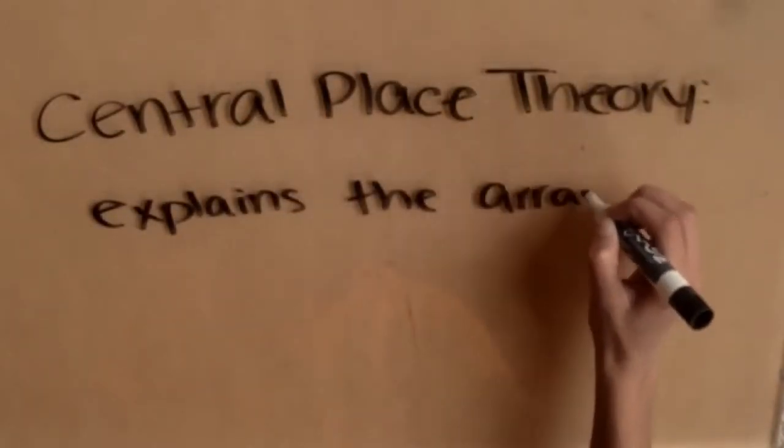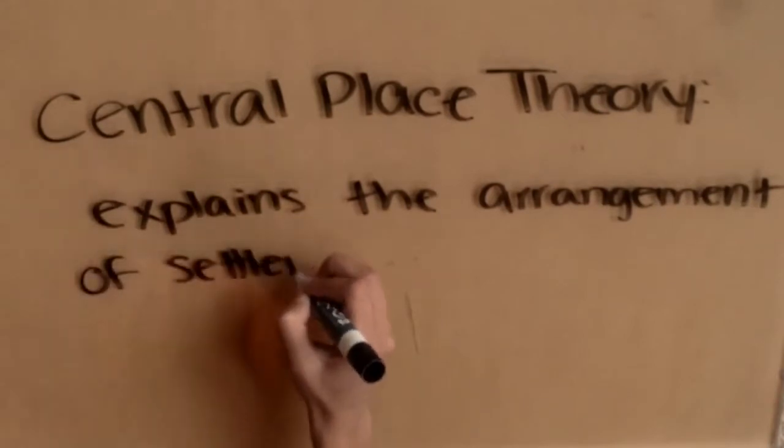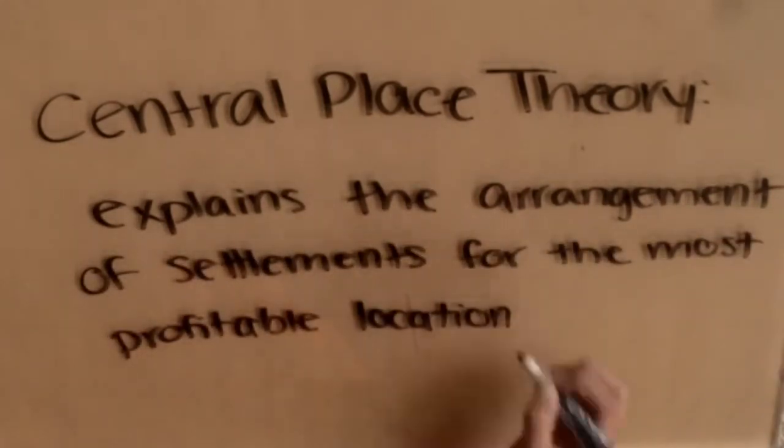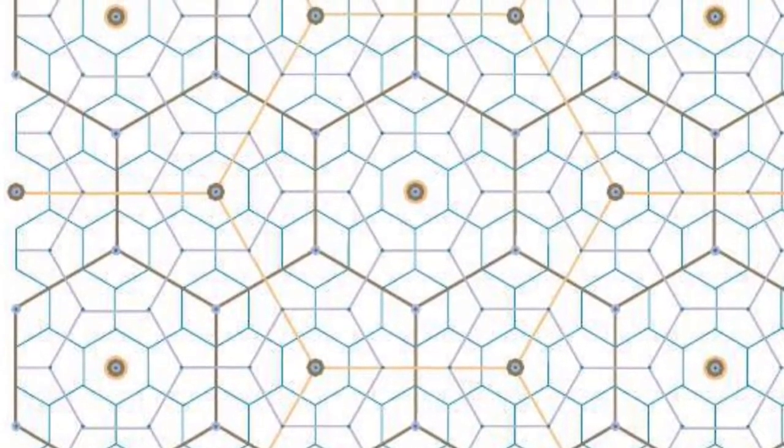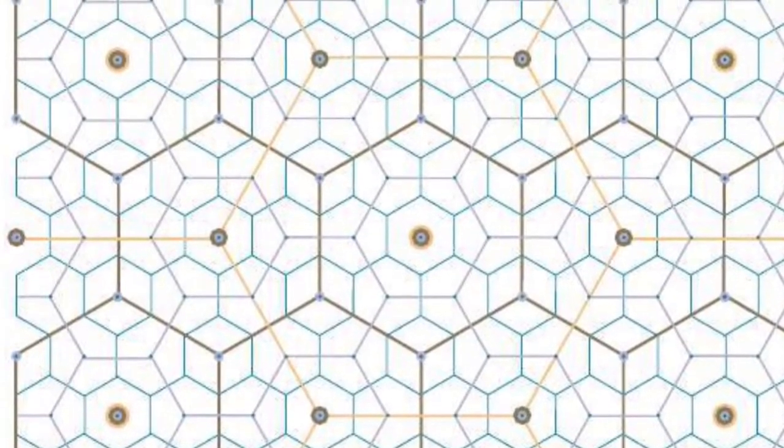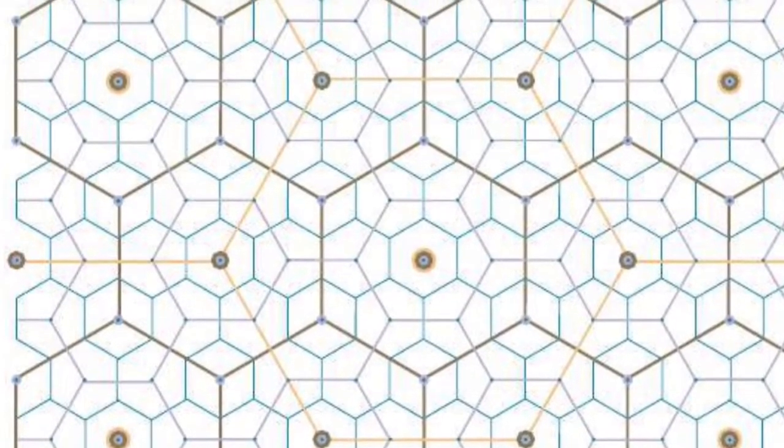Christaller's theory, or central place theory, explains the arrangement of settlements for the most profitable location. Walter Christaller, a German geographer, created his theory in the 1930s, and it was later improved upon in the 1950s.